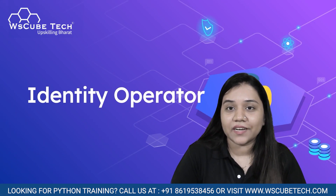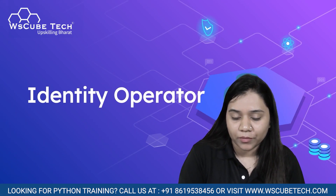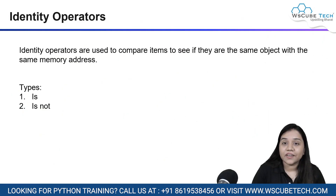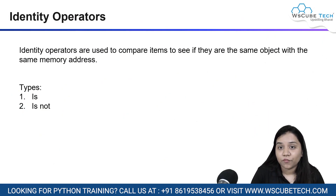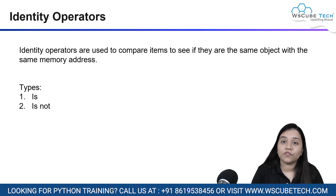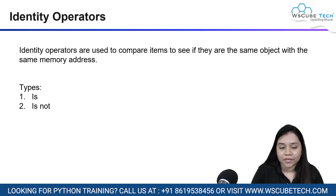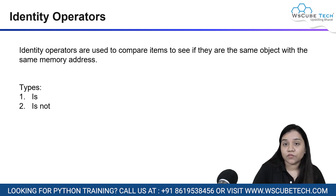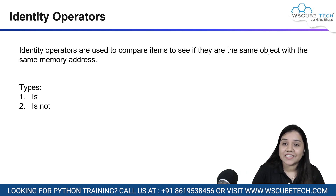So let's get started. In today's session, we will be talking about identity operators. The identity operator helps us check if two variables or two items we have provided are from the same object type or have the same memory address. There are two types of identity operators: 'is' and 'is not'.